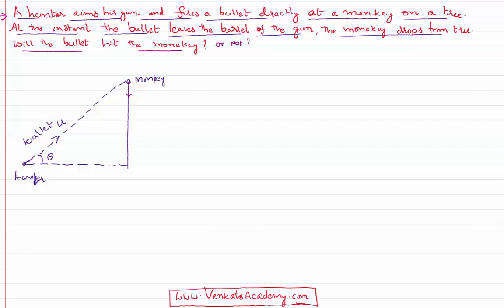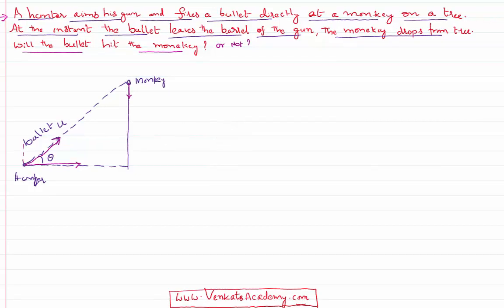Let us analyze first the perspective of the bullet. The bullet being projected with an angle theta will have both horizontal motion as well as vertical motion. We know the bullet takes a parabolic path. Say that it is hitting the tree at a point A. As time progresses, the bullet has traveled a distance x on the x-axis and a distance y on the y-axis.